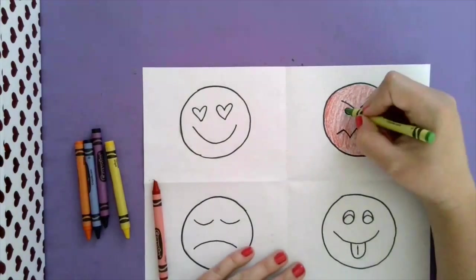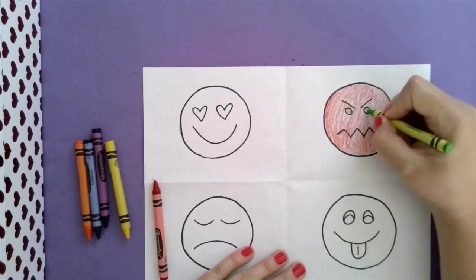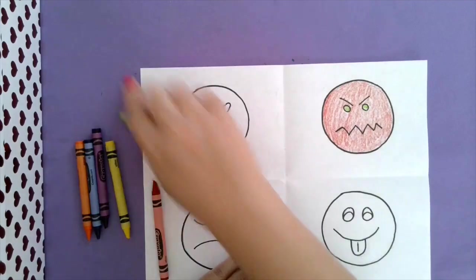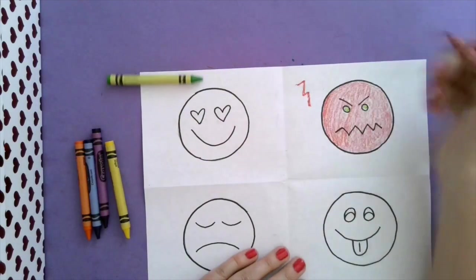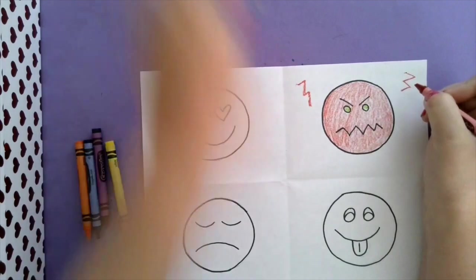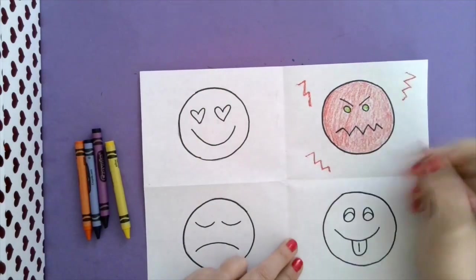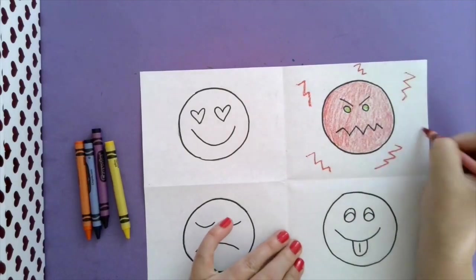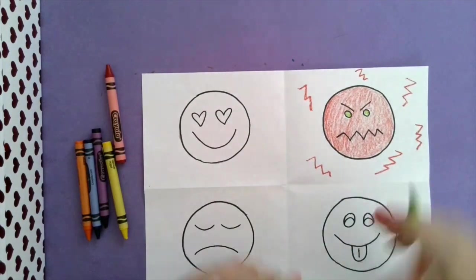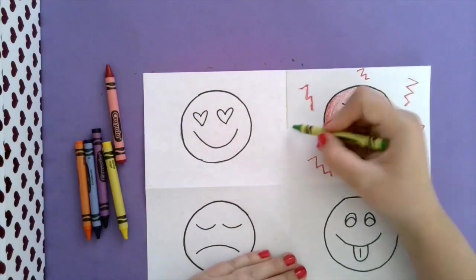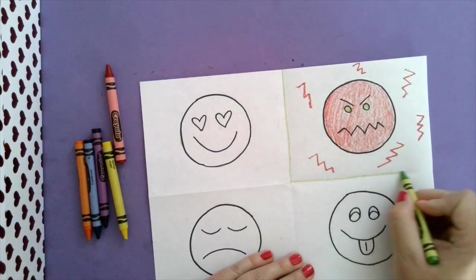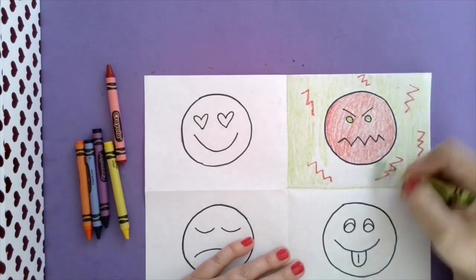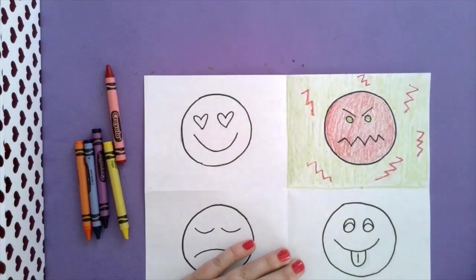And maybe we'll add green eyeballs. And then the background around your emoji, you can add maybe details. Some angry lightning strikes. And then we can color in around it. And now your first emoji is done.